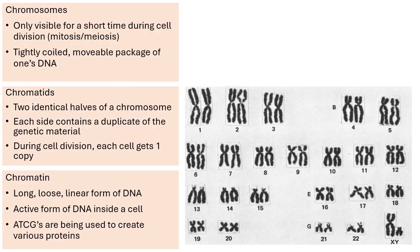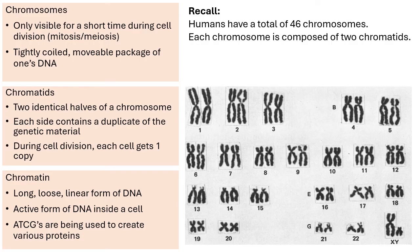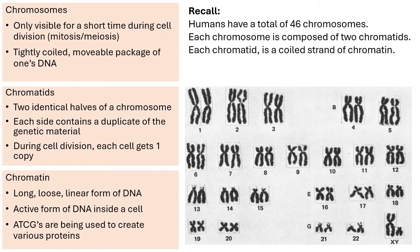As we wrap this up: humans should have a total of 46 chromosomes. Every chromosome is composed of two halves called chromatids, and every chromatid is a super condensed, tightly coiled strand of chromatin. That compares and contrasts what these three forms are.